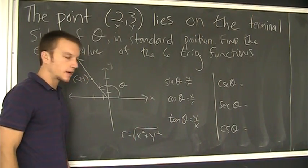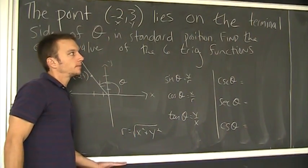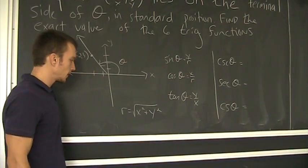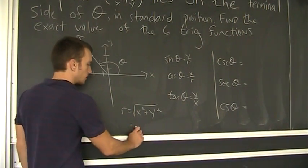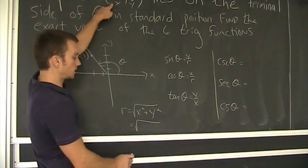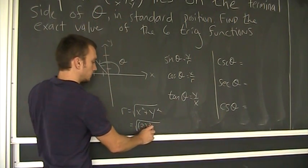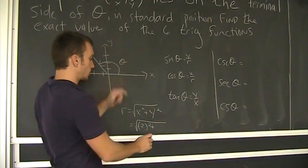So, r is root x squared plus root y squared. Okay? Move that up a little bit. So, in this case, x is negative 2. y is 3.